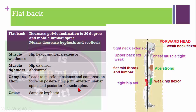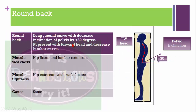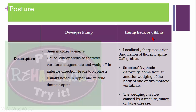Round back posture is a long round curve with decreased inclination of the pelvis below 30 degrees. The patient presents with forward head and decreased lumbar curve. Weak muscles include hip flexors and lumbar extensors; tight muscles include hip extensors and trunk flexors. The causes are the same as lumbar lordosis.